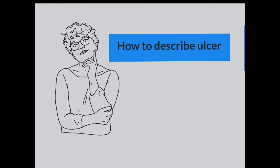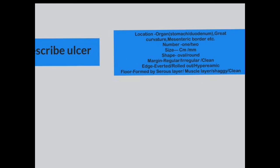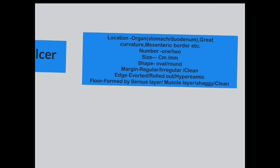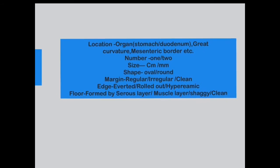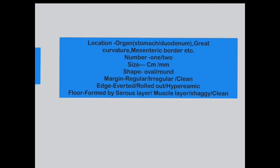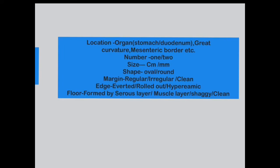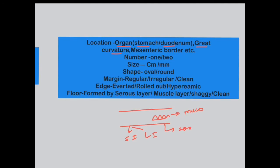Before going to the ulcers, in the previous practical we learned how to describe an ulcer: location, curvature, number, size, shape, margin, edge, and floor. If you are not able to understand this, please see the previous practical where I described how to describe the ulcer. One important point to mention: while describing an intestinal ulcer, you should state whether the ulcer is in the small intestine or the large intestine, and whether the ulcer is from the mucosal surface or from the serosal surface.